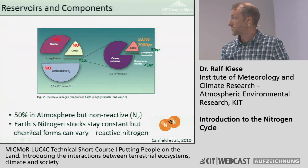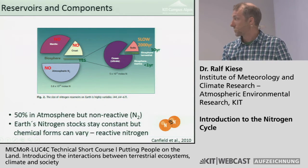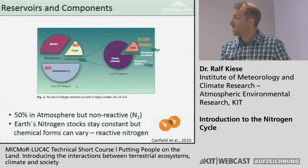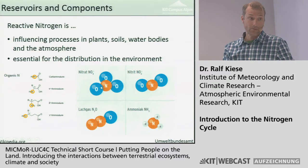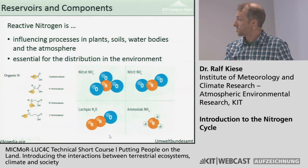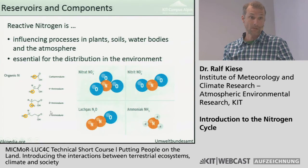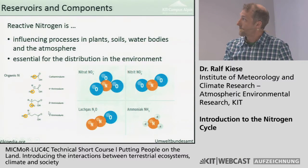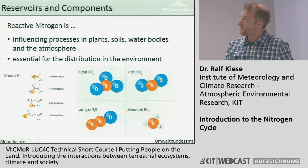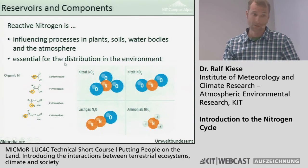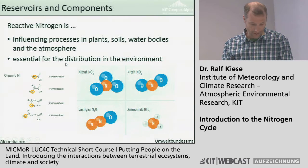The earth's nitrogen stocks stay constant but chemical forms can vary. This brings us to the keyword of reactive nitrogen, because we need this reactive nitrogen. Examples include nitrate which can be transported in water, N2O which is a gas, ammonia, and all organic forms such as amino acids. This reactive nitrogen is the main component when we talk about ecosystem processes, influencing processes in plants, soils, water bodies and the atmosphere, and it is essential for distribution in the environment.